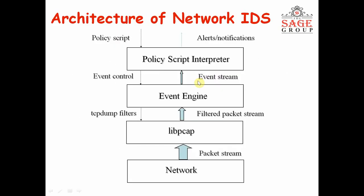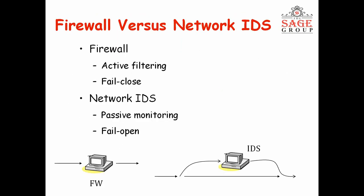Now we are looking at the architecture and then at firewall versus network IDS. A firewall is an active filter — it works on a fail or close basis. It can be hardware or software — it acts as a wall. Without the firewall, traffic cannot go through. If the firewall is open, then the connection can complete.